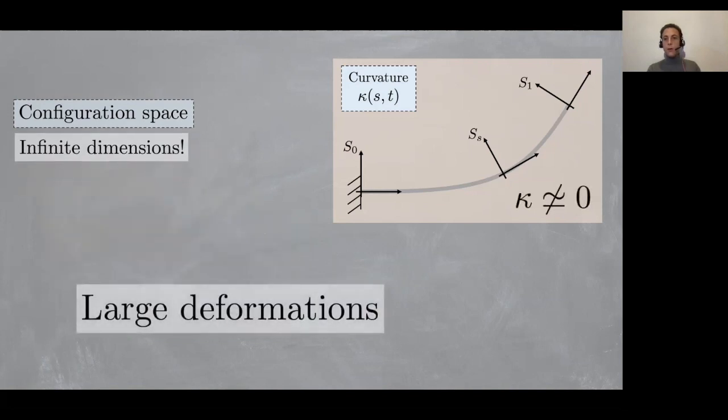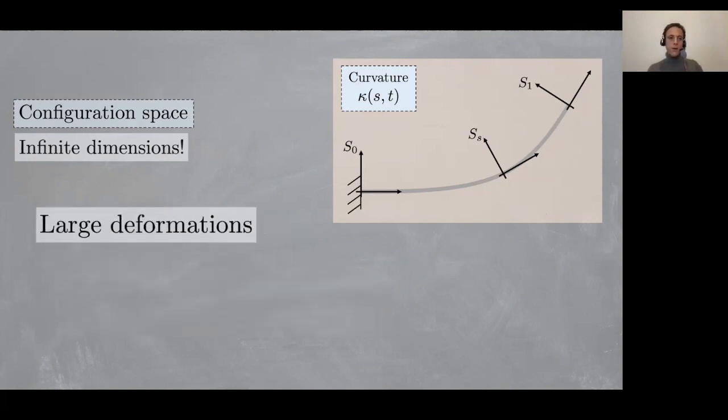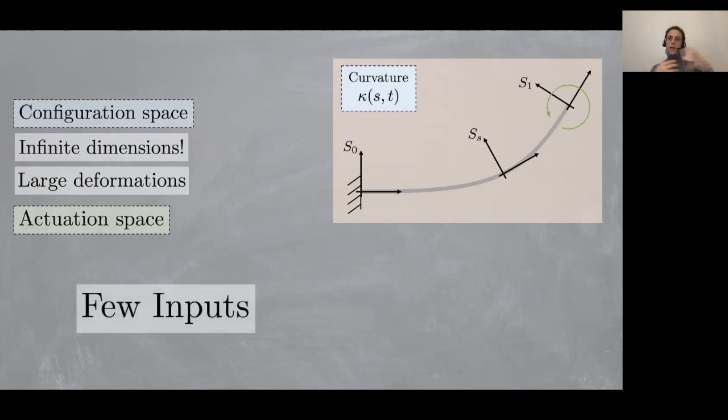On top of that, we cannot assume this kappa to be small as we can do in other similar classes of infinite dimensional robots like flexible link robots. Finally, we are constrained by the high dimensionality to always have few inputs with respect to the state, so we have a high level of underactuation.